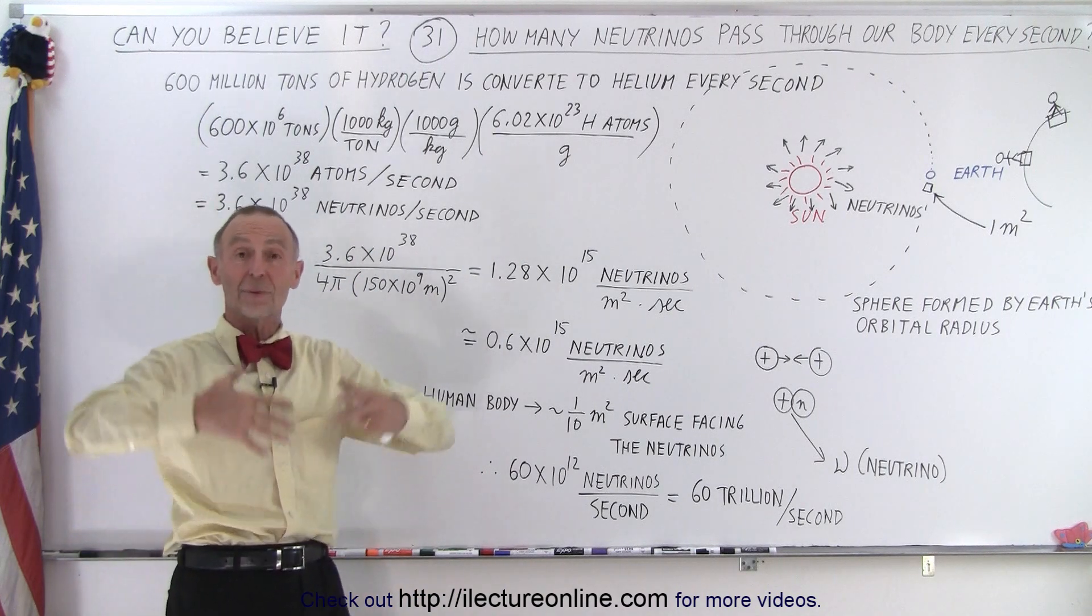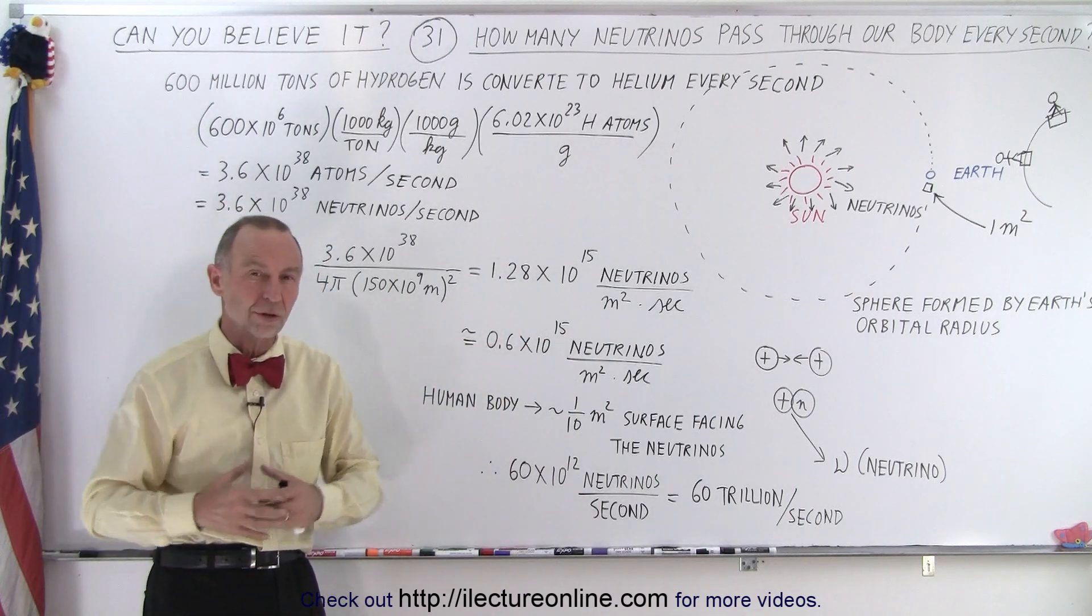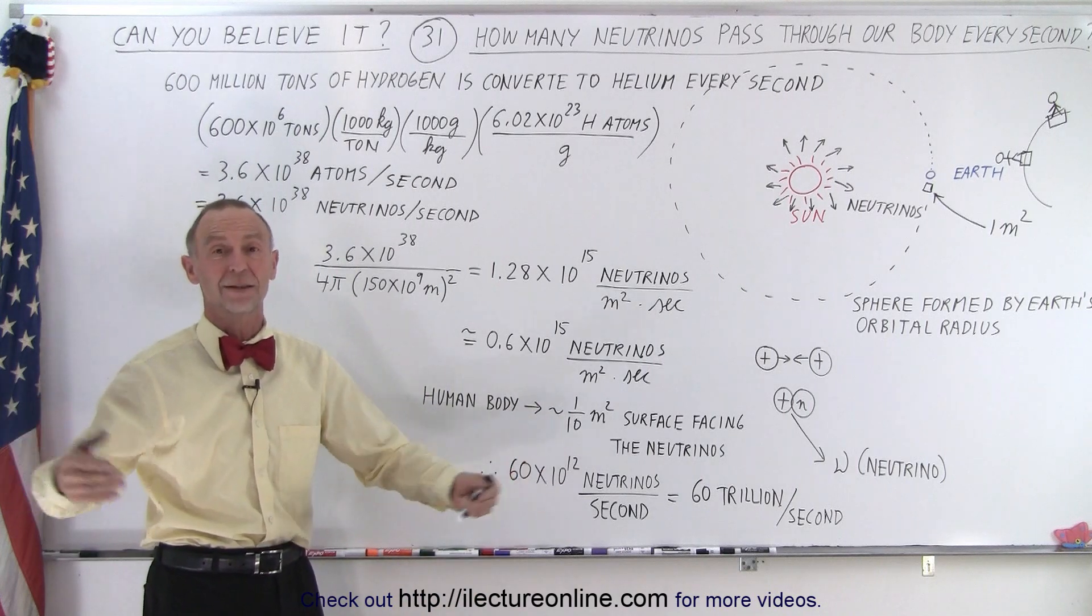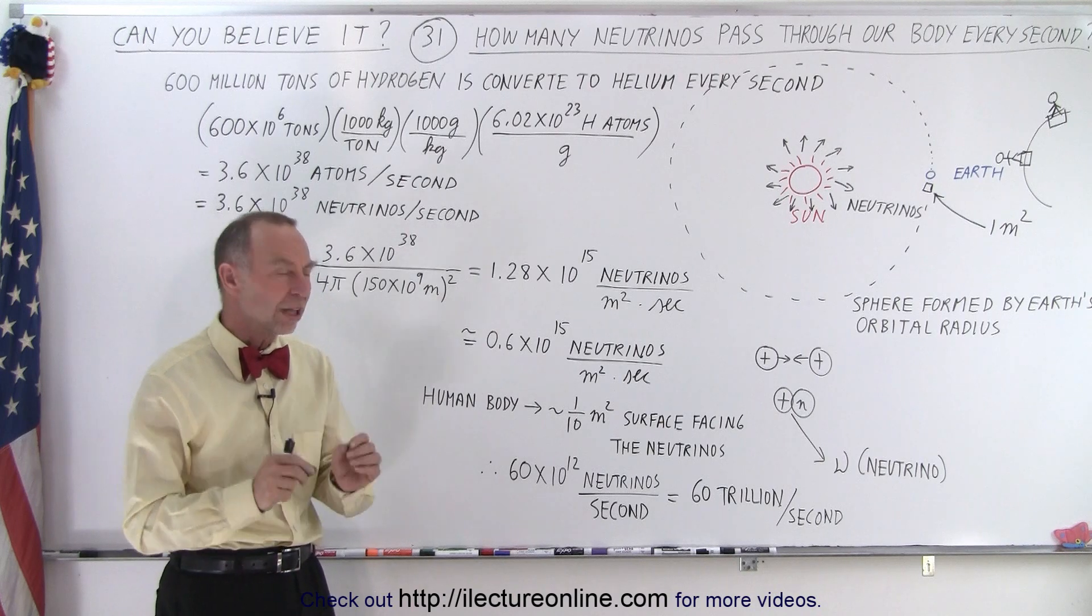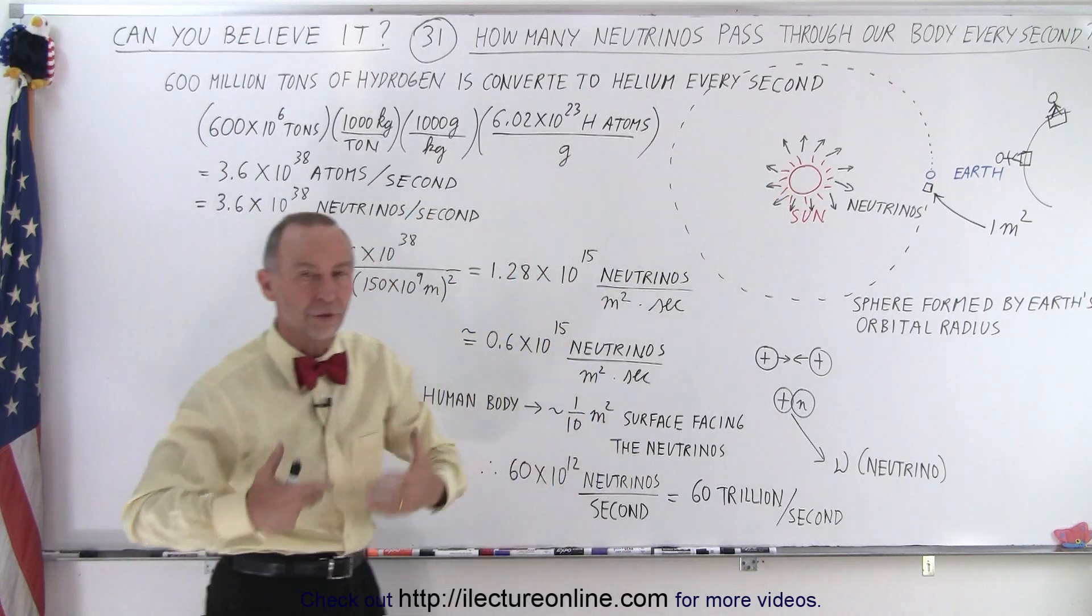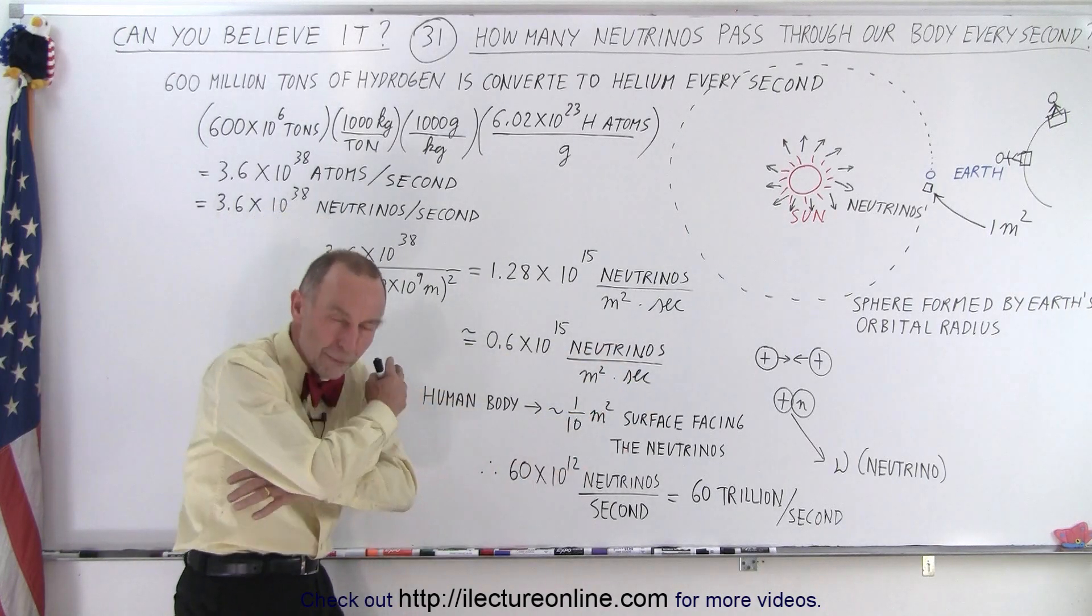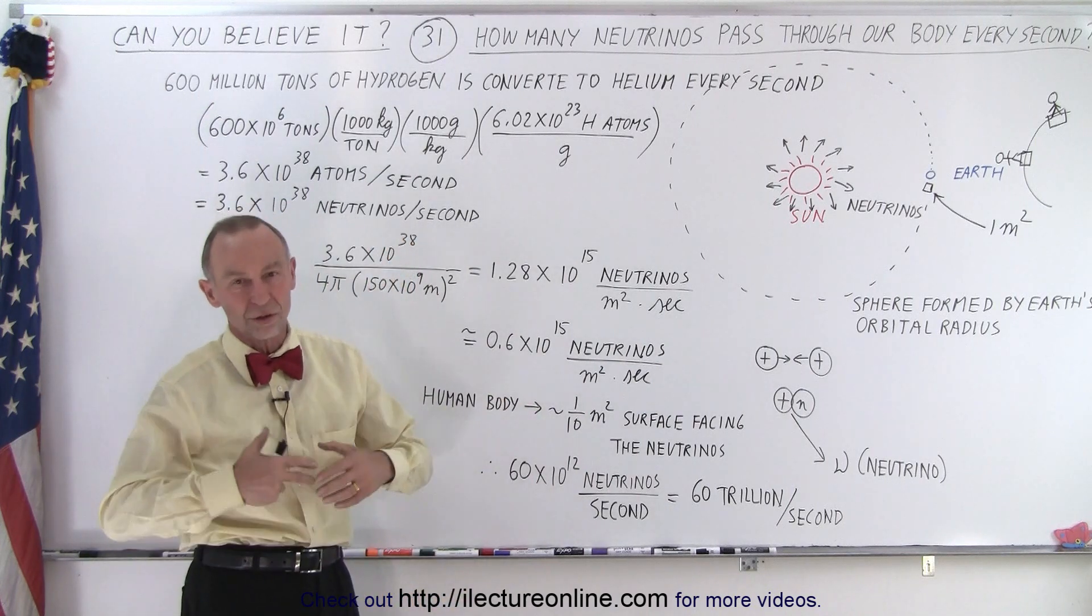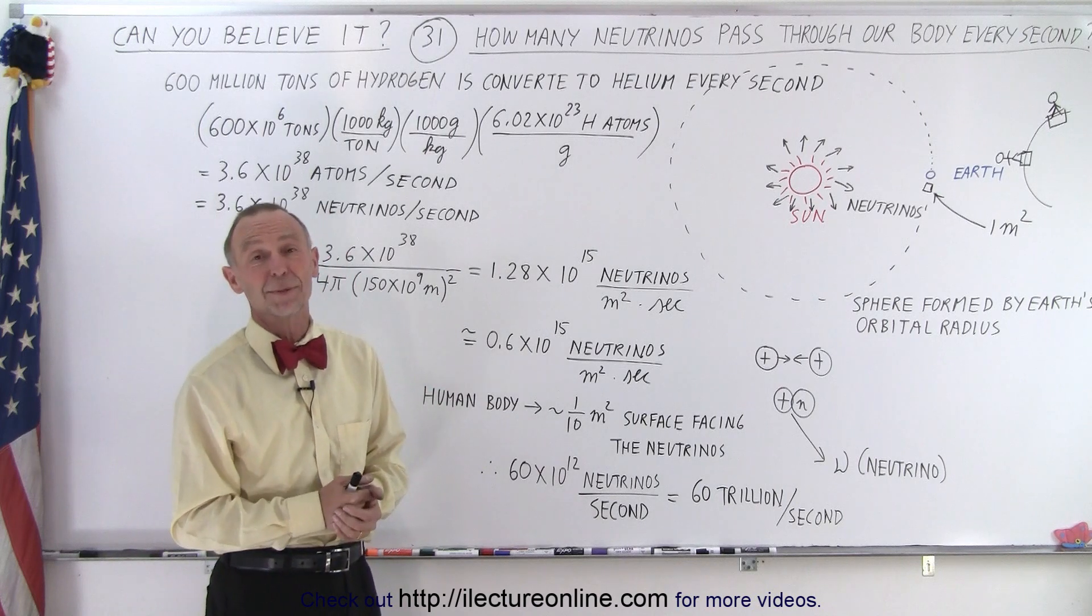So constantly every one of us are being hit by trillions upon trillions of neutrinos. Every single second they go right through us near the speed of light and we're not any worse because of it. That's astounding. All as a result of what happens in the core of the Sun as the Sun converts hydrogen into helium. Everything in the solar system is being bombarded by trillions upon trillions of neutrinos at all times and yet we don't seem to suffer from it.